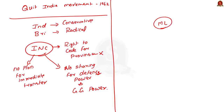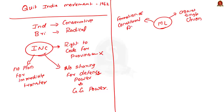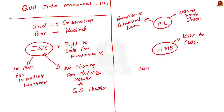The Muslim League also opposed the Cripps Mission — they were against the idea of a single union for India and did not like the procedure for creating the Constituent Assembly. The Hindu Mahasabha opposed it because they were against the provision giving states the right to cede or separate from the Indian Union. Finally, the mission also failed due to a clear lack of support from Viceroy Linlithgow, British Prime Minister Winston Churchill, and Secretary of State for India Leo Amery.